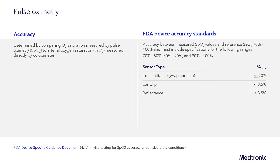ARMS approximates the mean absolute deviation between SpO2 and SaO2. The difference between a direct measured saturation and that measured by the pulse oximeter must be less than or equal to 3 percent for transmittance wrap and clip style, and less than or equal to 3.5 percent for ear clip and reflection sensors.